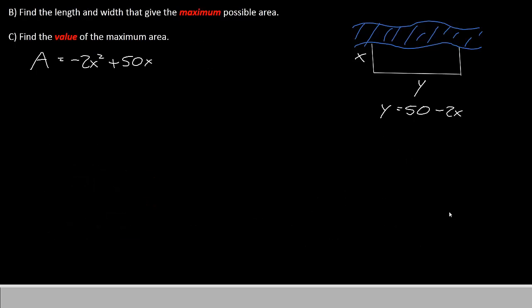So here are some other questions we could answer. For part B, it says to find the length and the width that give you the maximum possible area. And generally, when you find the maximum, what you're really looking for is the vertex, because that's the maximum of a second power equation.